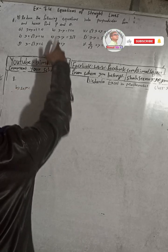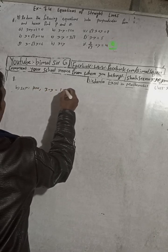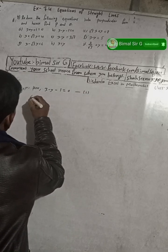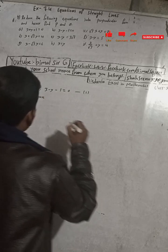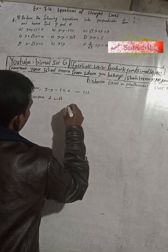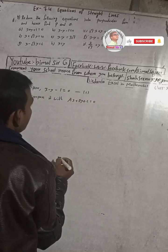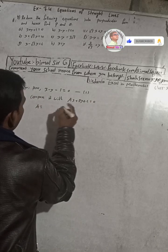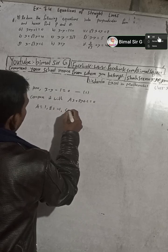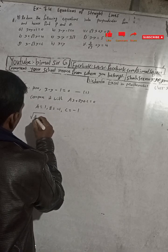Here is equation number V. The equation x minus y minus 1 is equal to 0 — this is equation 1. Now comparing it with the standard form ax plus by plus c equals 0, we get: a is equal to 1 (coefficient of x), b is equal to minus 1, and c is equal to minus 1.